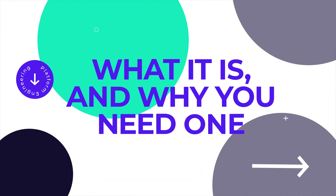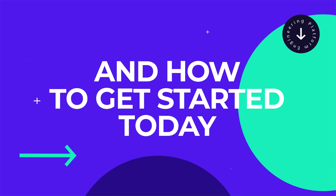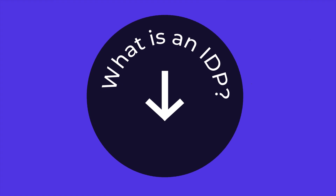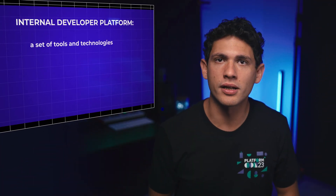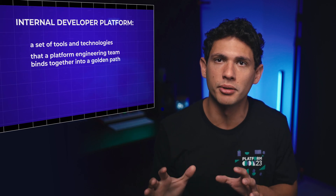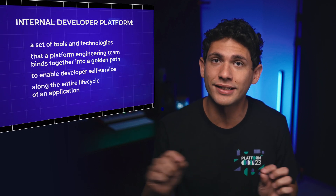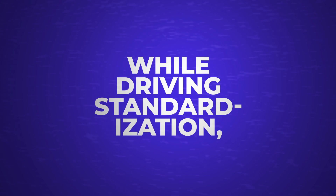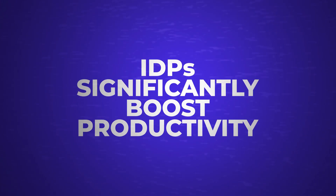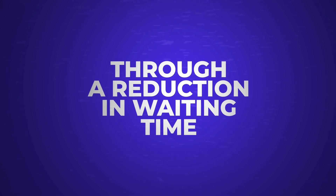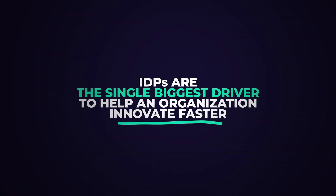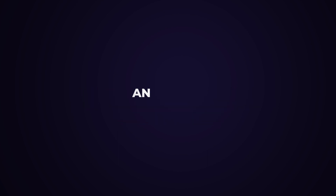We'll define what an IDP is, why you might need one, and how to get started on your platform journey today. An internal developer platform is a set of tools and technologies that a platform engineering team binds into a golden path to enable developer self-service along the entire lifecycle of an application. By providing developers with a self-service option while driving standardization, IDPs significantly boost productivity through a reduction in waiting time, distraction, or manual work for operations teams. A recent benchmarking study showed that IDPs are the single biggest driver to help an organization innovate faster and slash time to market.